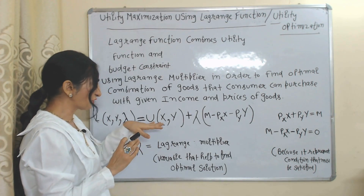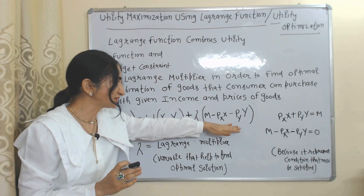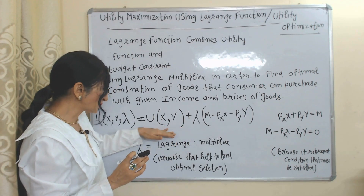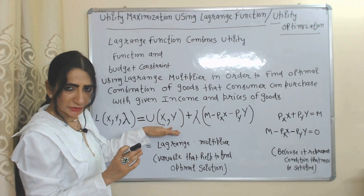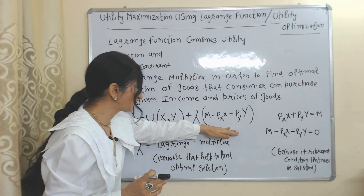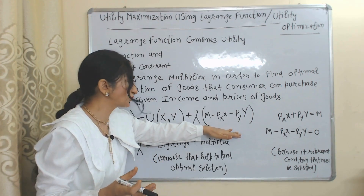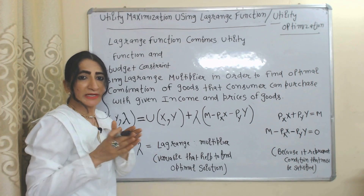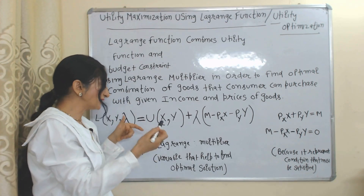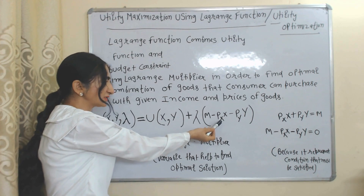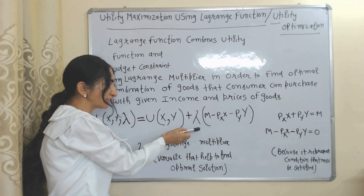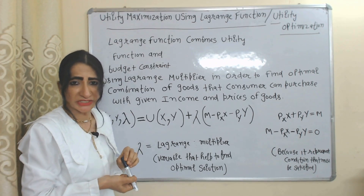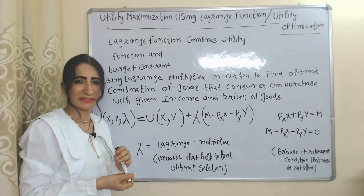So we can say that the Lagrange function is a combination of the utility function and the budget constraint by using the Lagrange multiplier. The first part represents the utility function, the second part represents the budget constraint, and lambda is the Lagrange multiplier. The Lagrange function finds the optimum combination that the consumer should buy with given income and prices of goods.